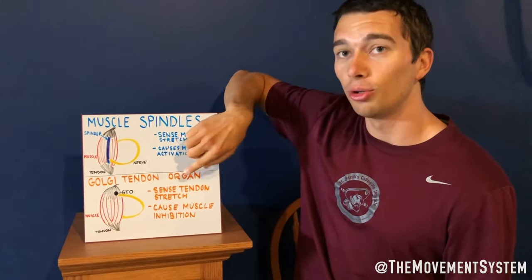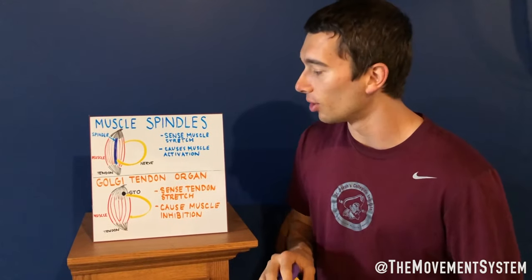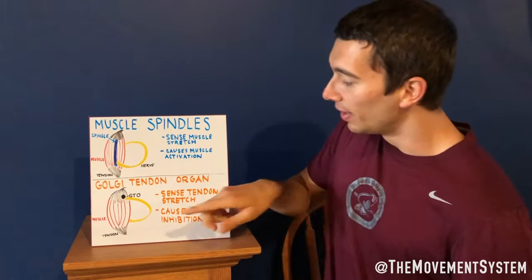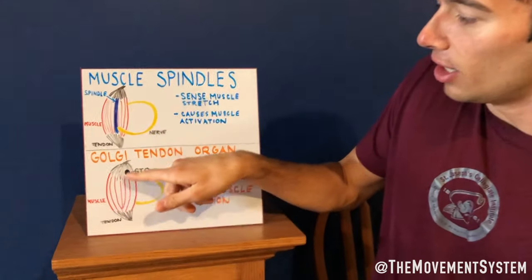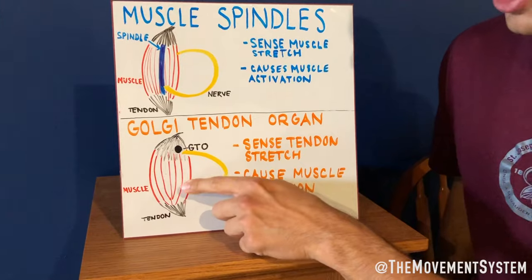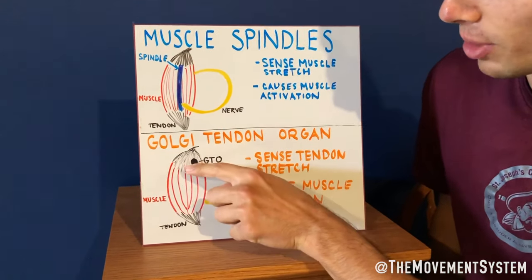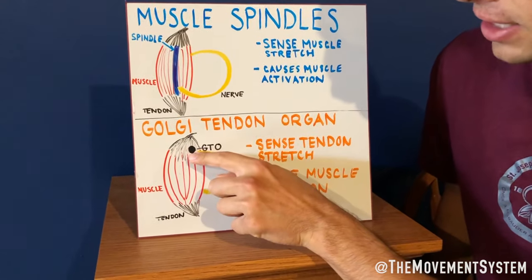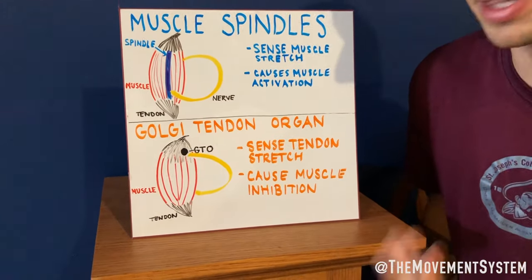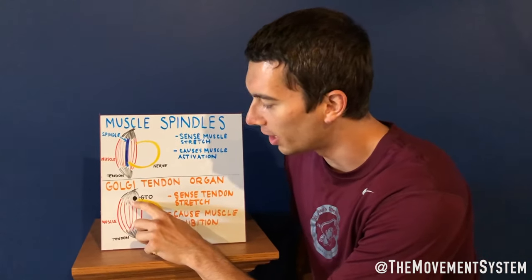Now we're going to go into the Golgi tendon organ, which is a little bit different. The Golgi tendon organ is going to be within the tendon. We have muscle fibers and then on either side of those muscle fibers is the tendon that connects the muscle to the bone. Within that tendon right here is the Golgi tendon organ — we're just representing it as a black dot. There are thousands of them within tendons, but we're just representing it as one dot there.